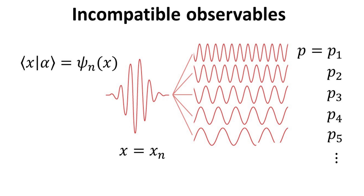If our quantum state alpha is given by one of the position eigenstates n, then the measured position will always equal x_n. However, if we perform a measurement of the momentum, we will find that the momentum will be different every time we perform a measurement of the prepared quantum state. This is because a wave function localized in position is highly delocalized in momentum.